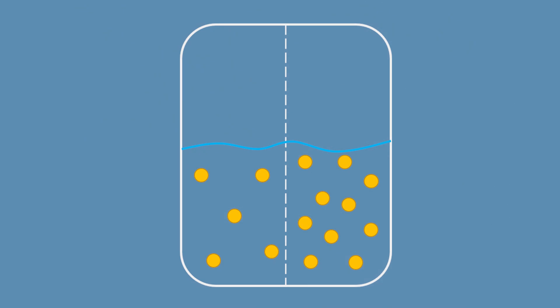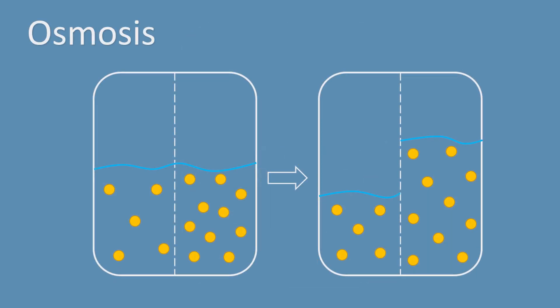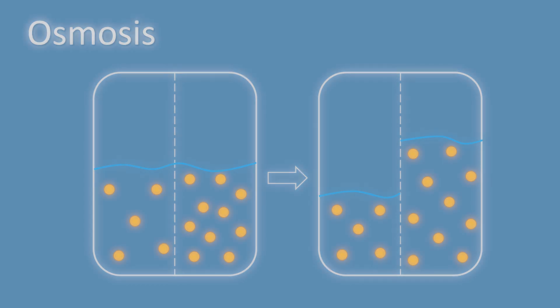Osmosis is the process of water moving across a semi-permeable membrane along a concentration gradient. Anytime you're talking about diffusion or osmosis, you're talking about that substance moving from where it is high to where it is low. So with osmosis, if you have more water on one side and less water on the other, it's going to move from where there's more water to less water. So we're specifically talking about the movement of water or fluids.